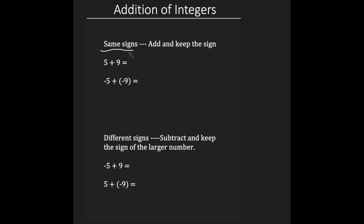When your signs are the same, meaning that you're adding two positive integers or you're adding two negative integers, the rules state that you add and keep the sign. So here in the first example, I have 5 plus 9. Both are positive integers. So I would add, which gives me 14, and my answer will be positive.